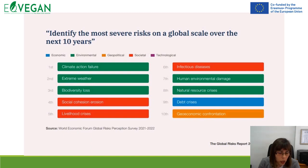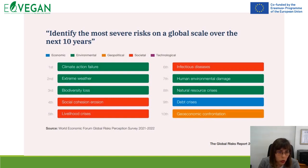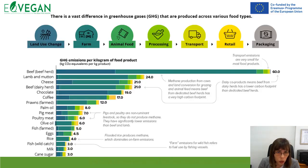When discussing sustainability, there is impact to the environment, economy, and society. The most severe global risks include climate action failure — ranked as the first risk on the global scale — then extreme weather, biodiversity loss, and regarding society: social cohesion erosion, livelihood crisis, and infectious disease. We need to think carefully about these risks across environment, economy, and society.